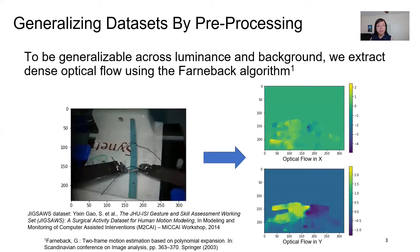One of the challenges in this field is the lack of datasets. Jigsaw is perhaps the most widely used. The left image shows an example of the knot tying tasks in Jigsaw's dataset, and we see that this is not very like how we imagine surgeries to be. We want to make sure that the algorithms we learn are not specific to this setup, and so we add a data preprocessing step of extracting the optical flow and introduce some invariance towards background and illumination.